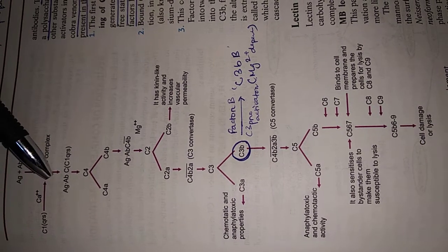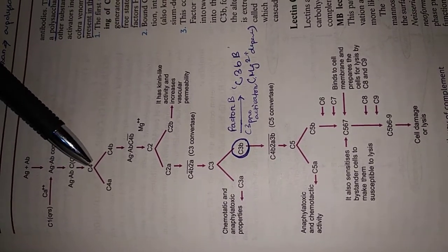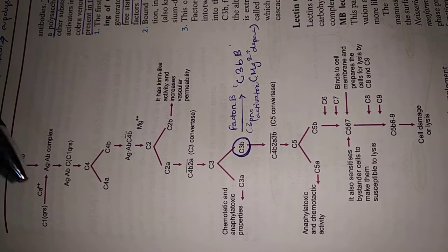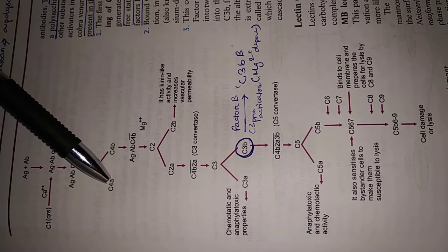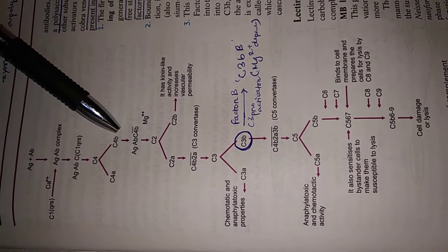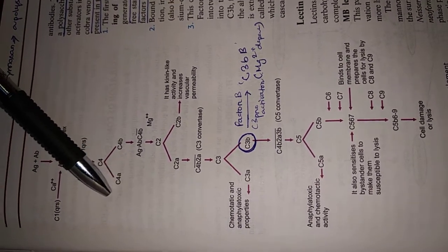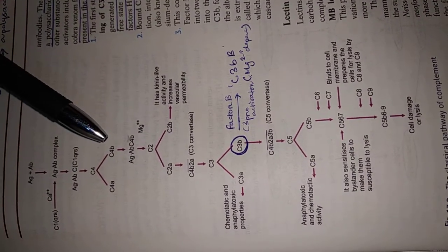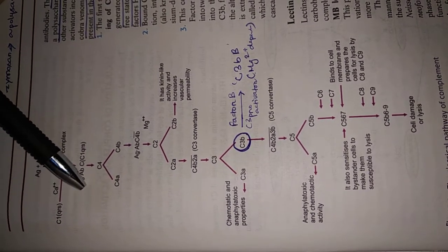The antigen-antibody complex along with the C1 component will activate the C4 component of the complement system. C4 is broken down into two parts: a heavier part (C4b) and a lighter part (C4a). The lighter C4a part moves freely in circulation. The heavier C4b part remains attached to the antigen-antibody and C1 complement complex.